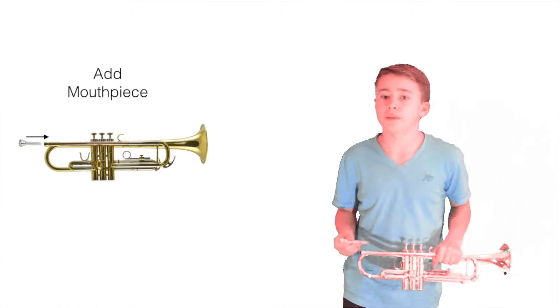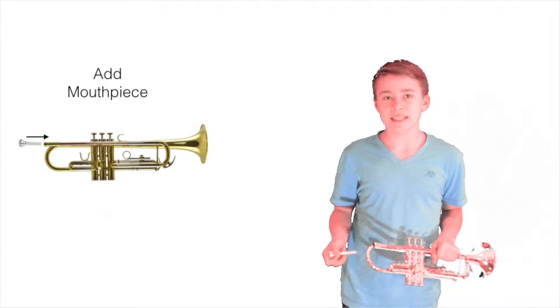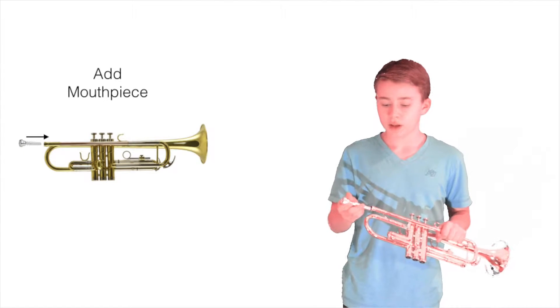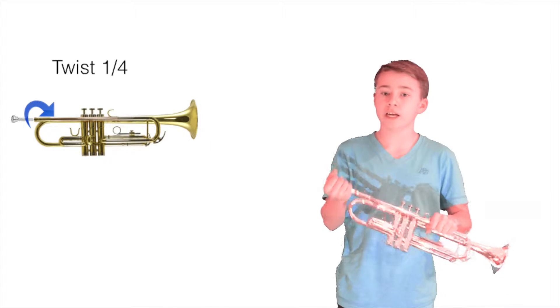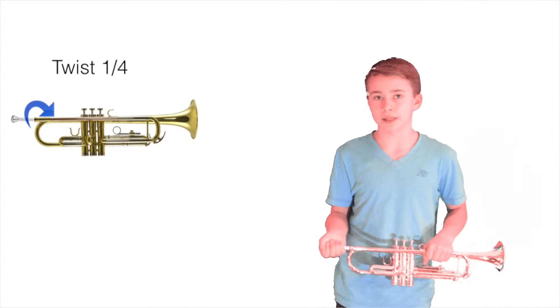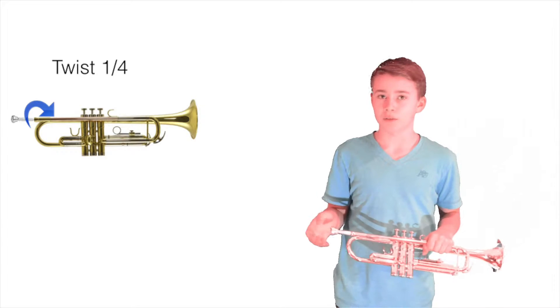Assembling a trumpet isn't very tricky. Let's grab the trumpet by the lead pipe and the mouthpiece. Carefully slide the mouthpiece into the mouthpiece receiver and give it a gentle quarter turn so it stays in place. That's it. You're almost ready to play.